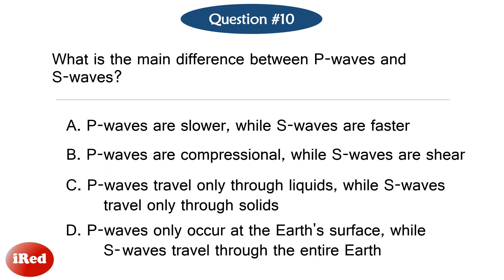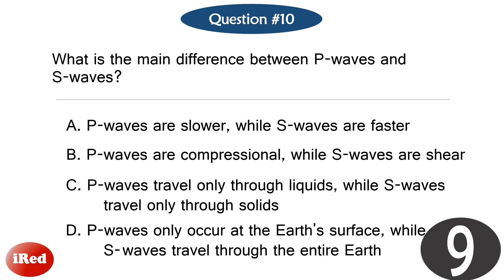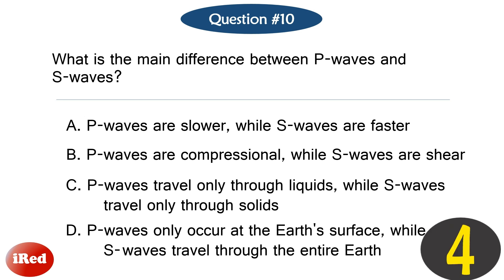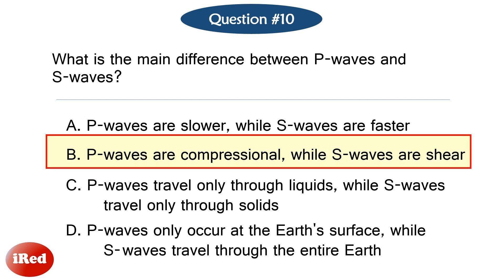Question number ten. What is the main difference between P waves and S waves? The correct answer is letter B: P waves are compressional while S waves are shear.